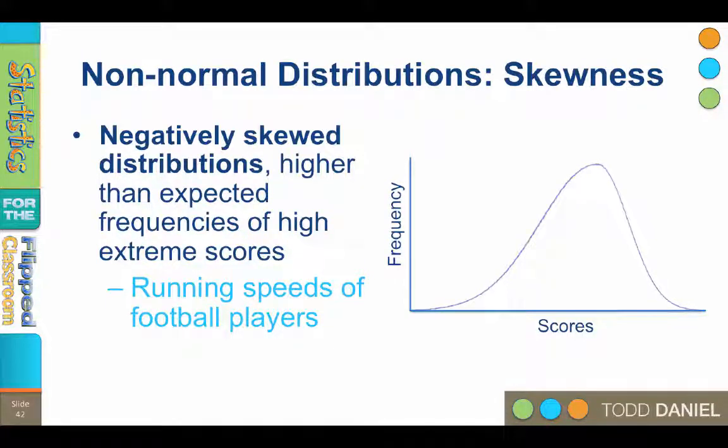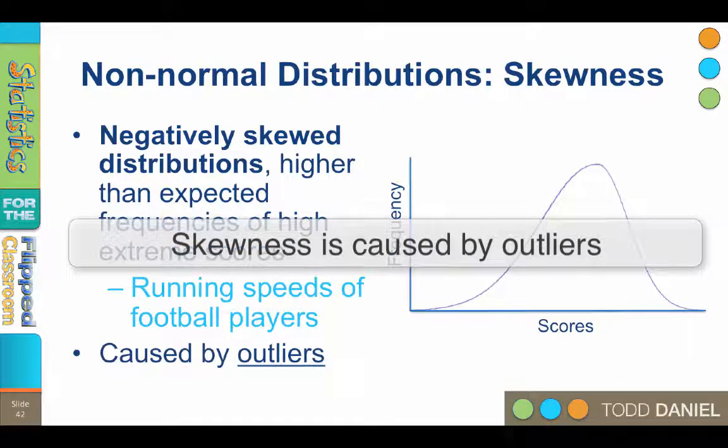Negatively skewed distributions have a higher than expected frequency of high or extreme scores on the right, and the tail is pulled out to the left end of the number line on the x-axis. For example, if we were interested in the running speeds of football players, we might find a lot of very fast players but only a few slower runners. Skewness is always caused by outliers in the direction of the tail.